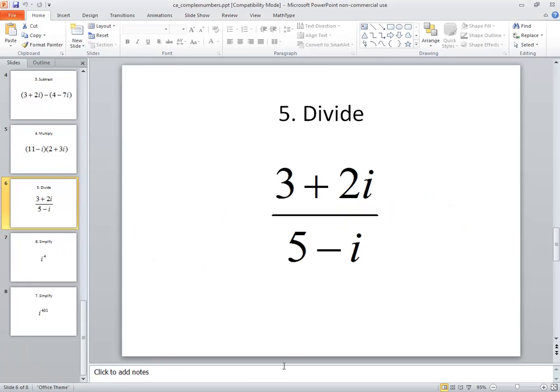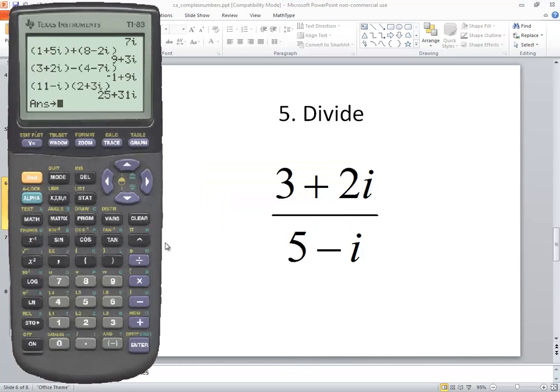Now division, a little bit different. Anytime you have more than a single number, single variable, single i, single anything on top or bottom of your fraction, you have to put parentheses on the calculator. So the trick to this is put parentheses on the top part, parentheses on the bottom part.